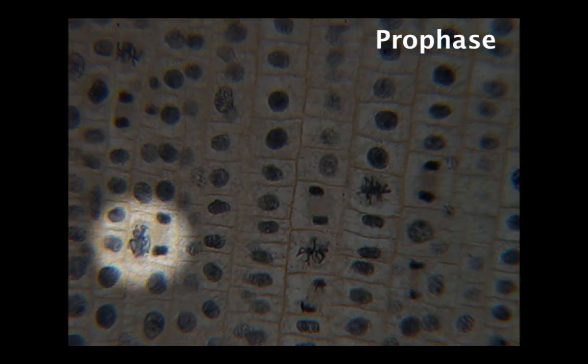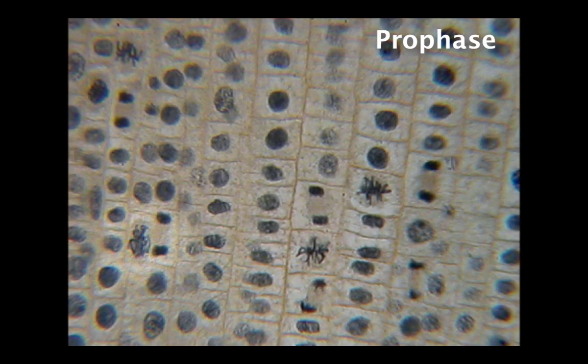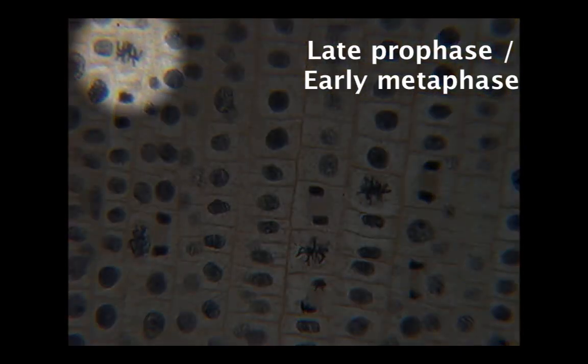Firstly, here we can see a cell that is going through prophase. Up in the top left hand corner, this cell is probably in late prophase or early metaphase.